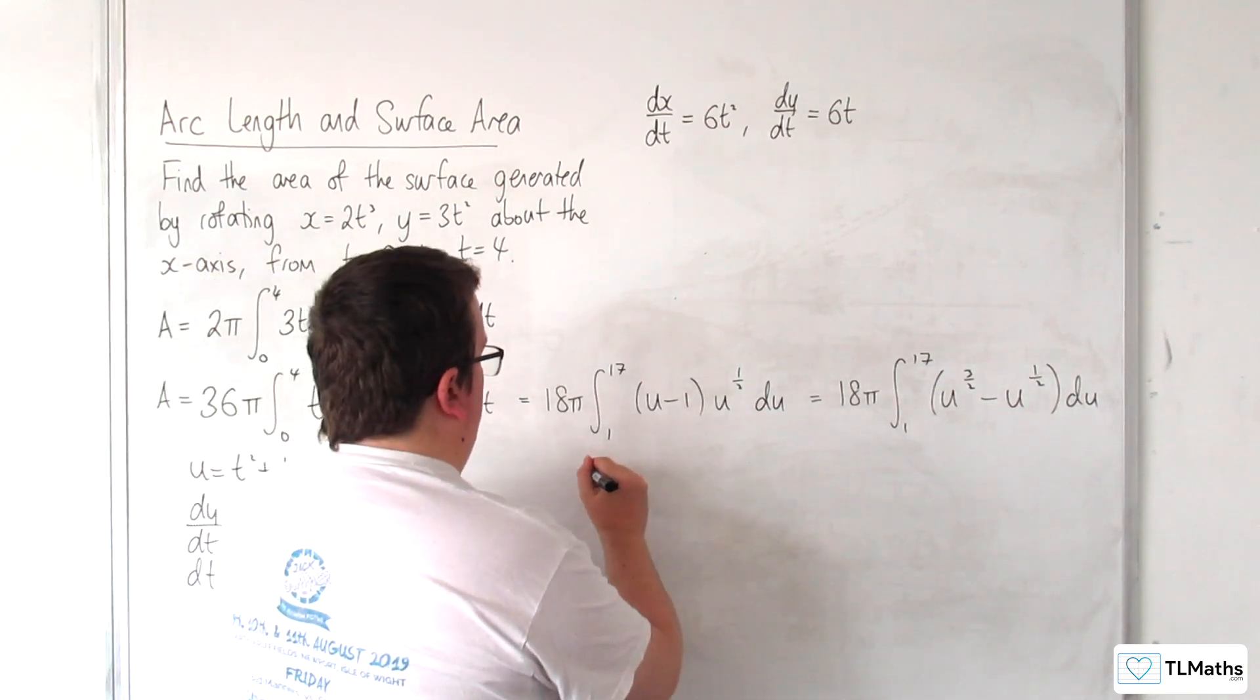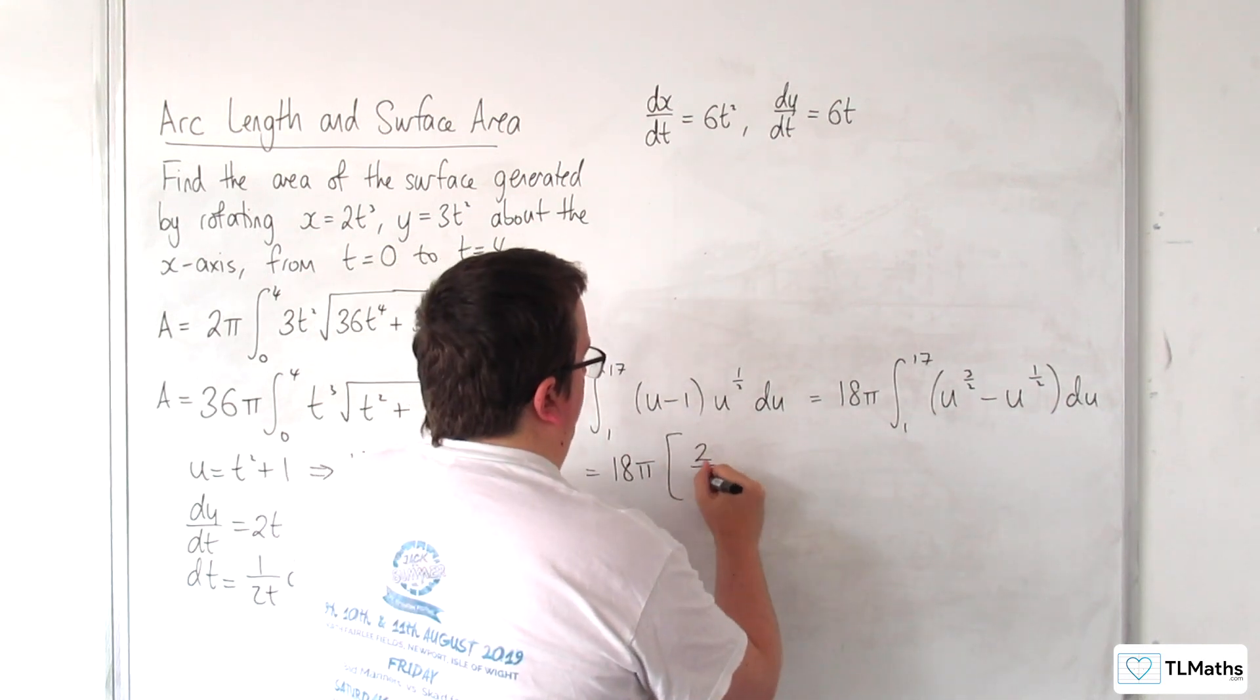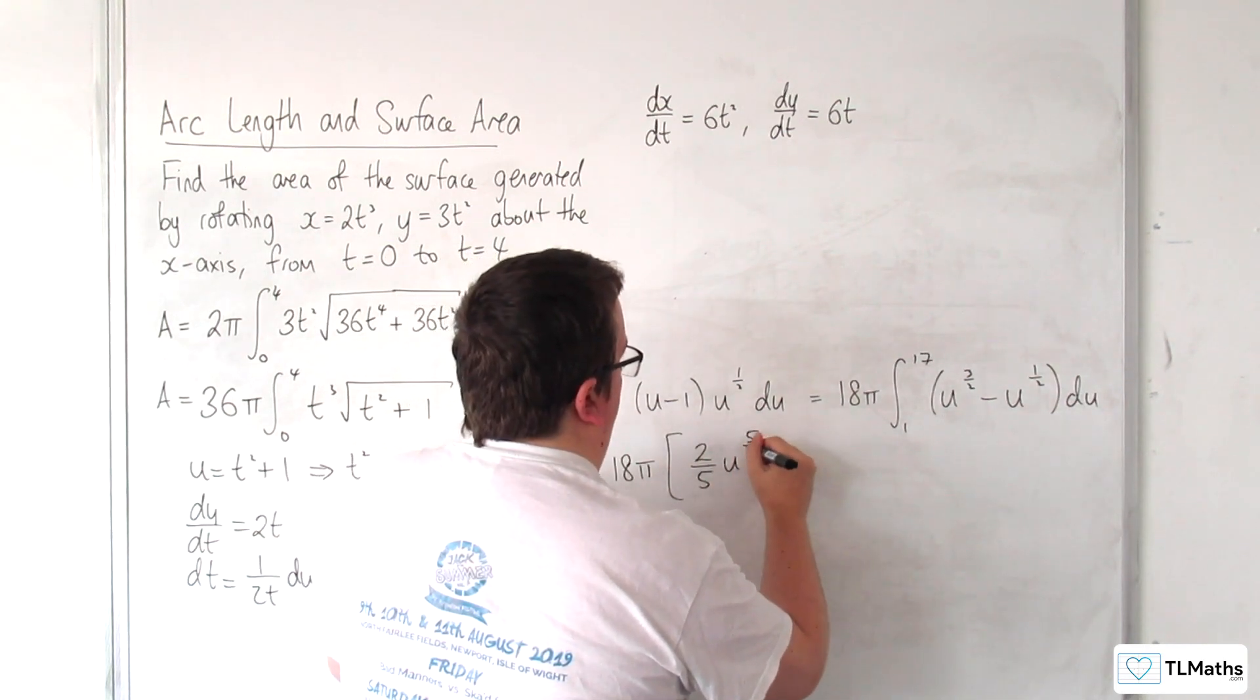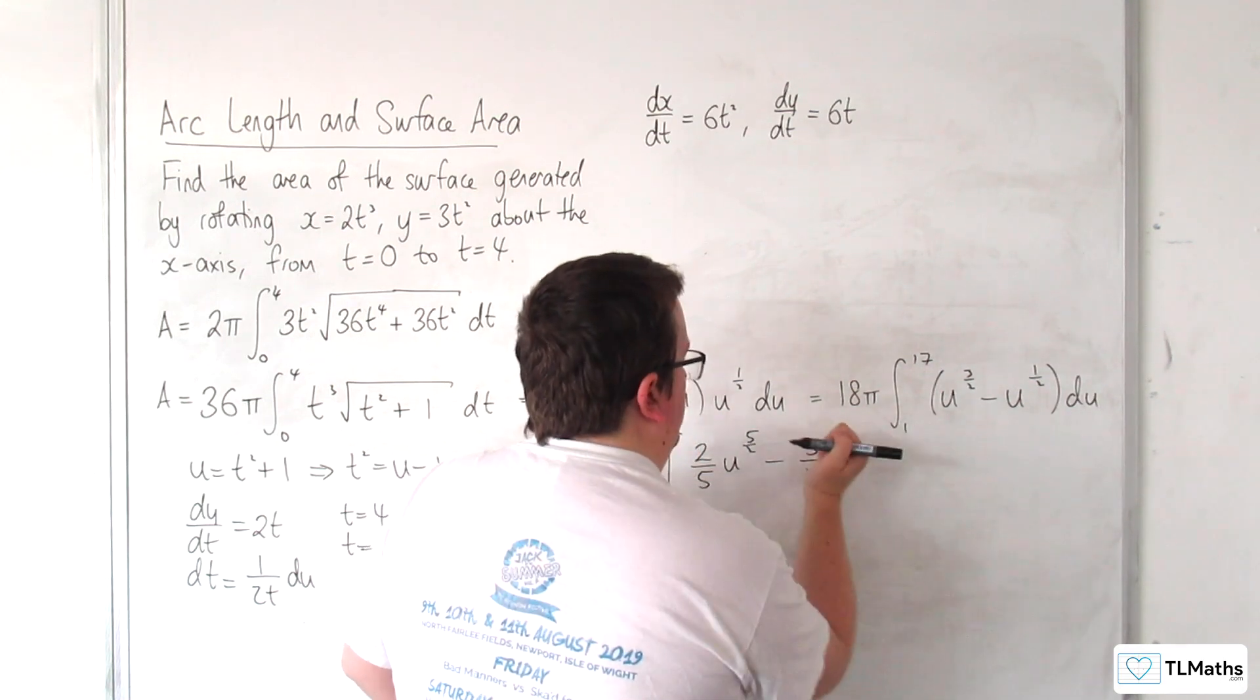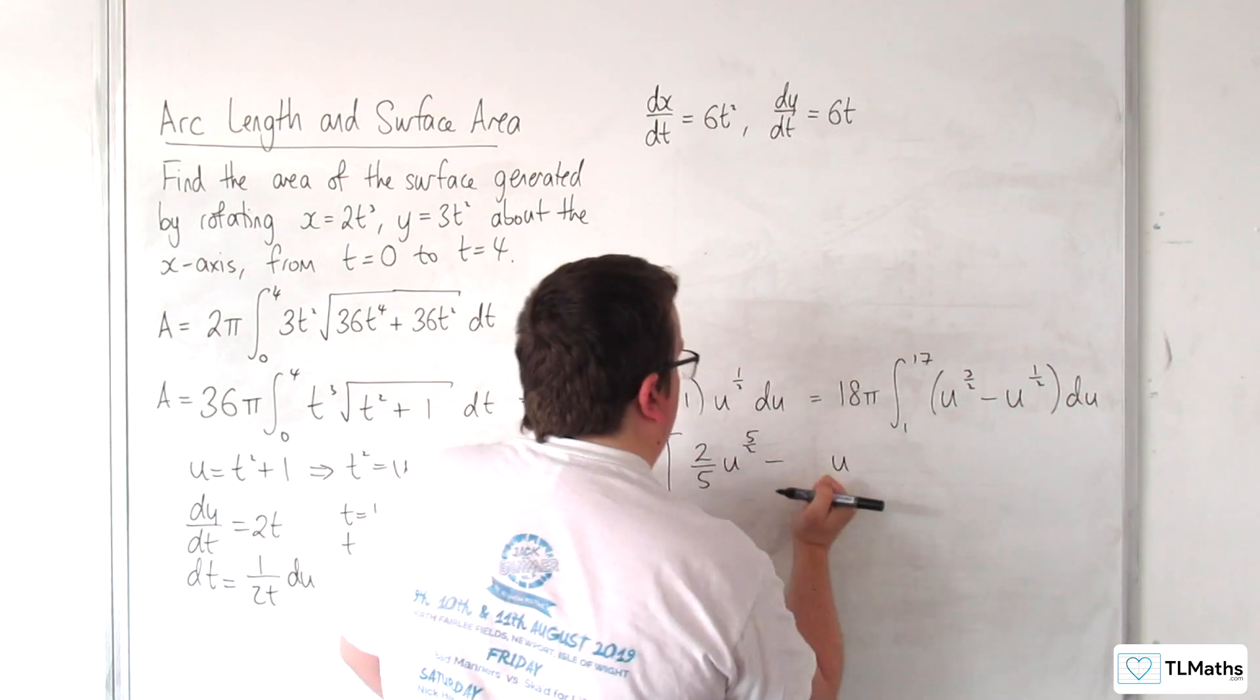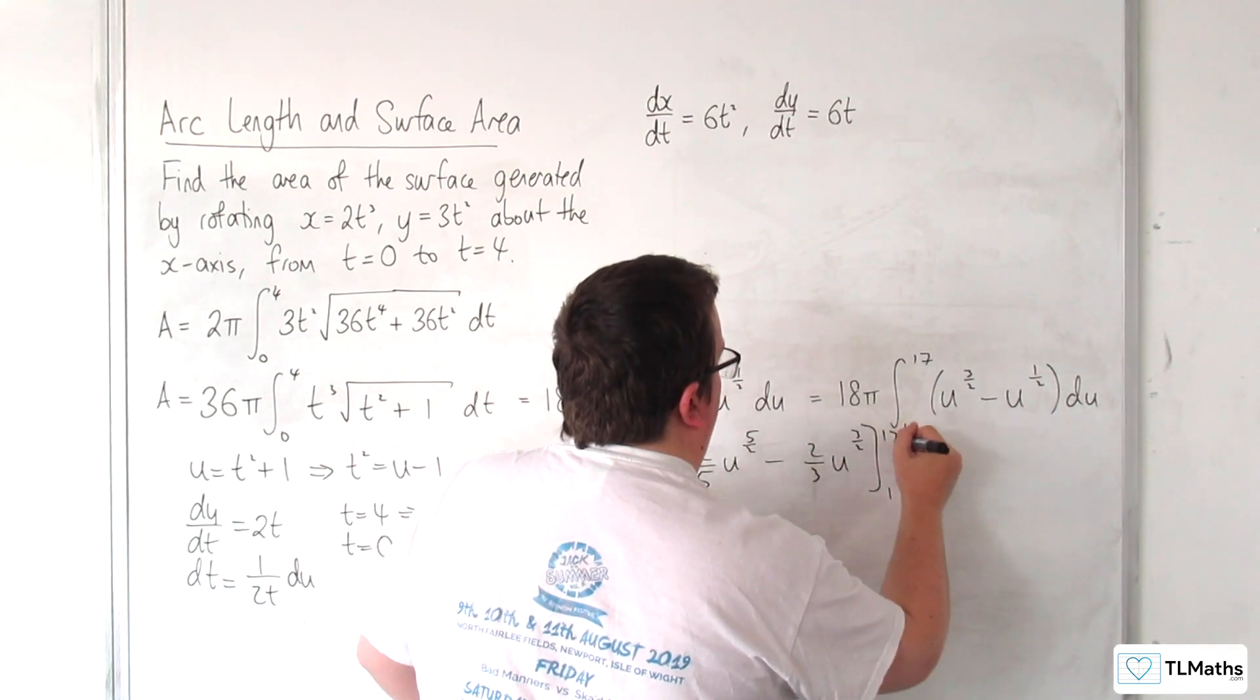Okay, we can integrate that directly, so 18π times by 2 fifths, u to the 5 halves, take away, oh sorry, 2 thirds, 2 thirds rather, u to the 3 halves, evaluated between 1 and 17.